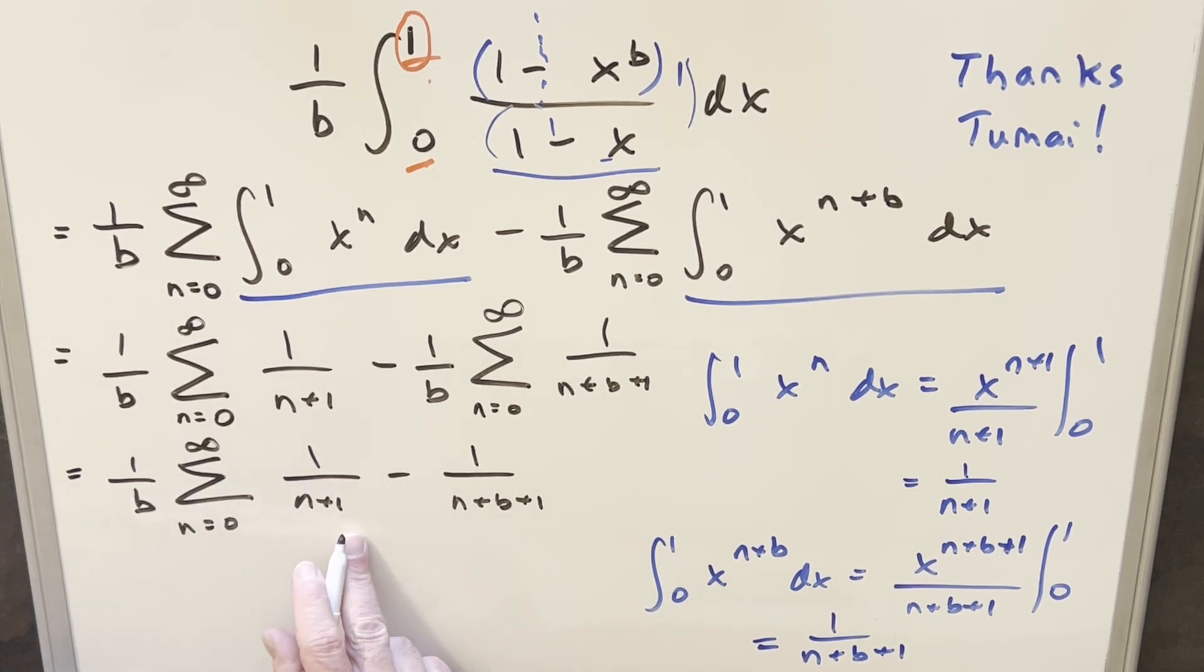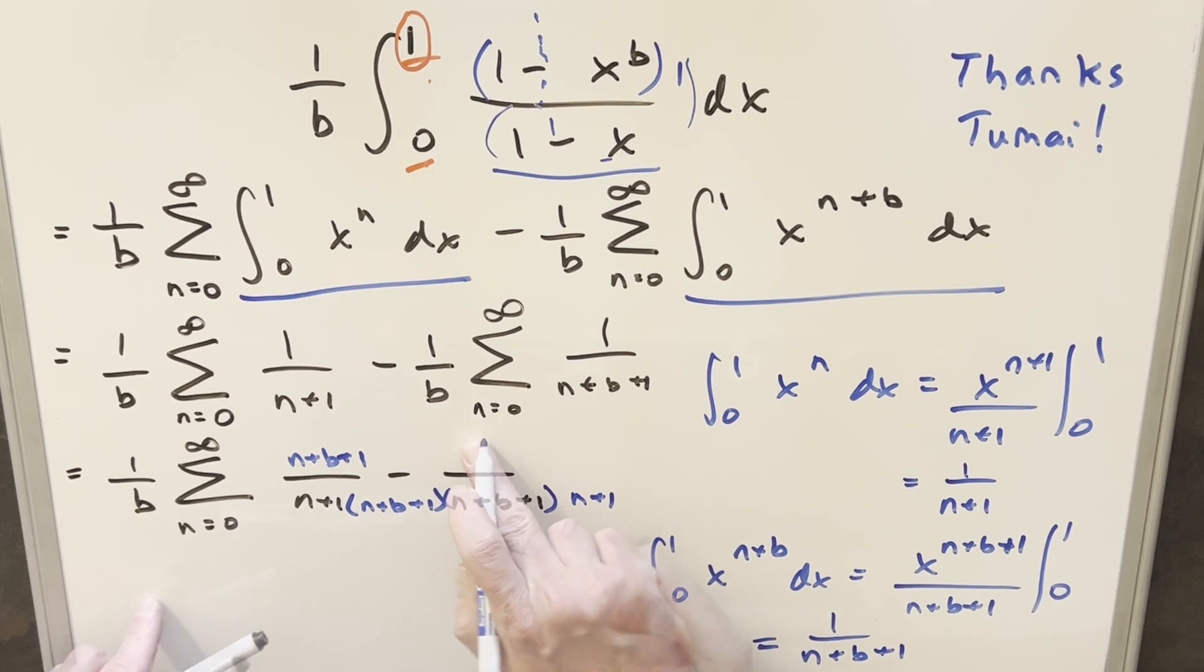And then from here, what I want to do is get a common denominator and see if we can push these together. So on this one, I can multiply by 1, multiplying by n plus b plus 1, doing the same thing in the numerator. And then for this one, I know it's a little crowded, I'm going to multiply in n plus 1, multiply in n plus 1 here.